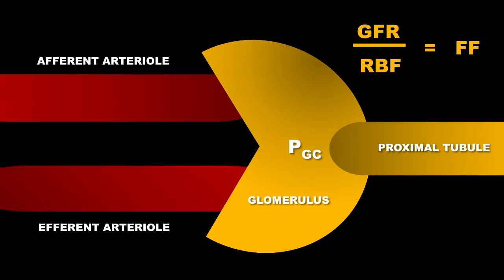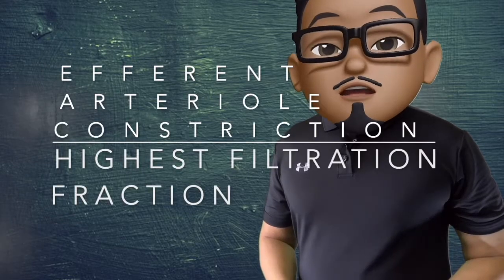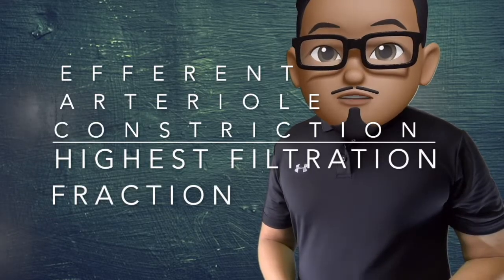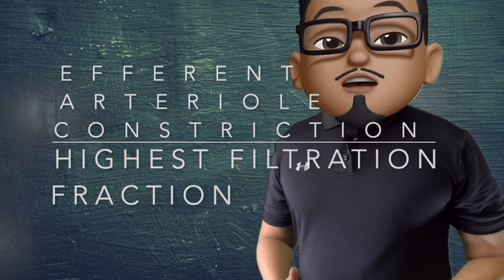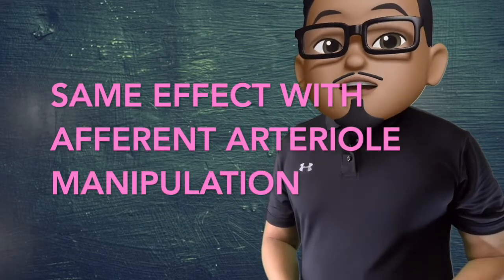If we constrict the efferent arteriole, your hydrostatic pressure in your glomerular capillary will increase. This will increase your GFR, but it will decrease your renal blood flow, and in the end it will increase your filtration fraction. Manipulating the efferent arteriole by constricting it will give you the highest filtration fraction rate. Decreasing the radius of your efferent (constricting it) will increase GFR, while decreasing the radius of the afferent will decrease your GFR.